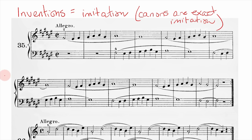But just for the purpose of today's tutorial I want to do a quick super quick recap on what a Canon is. So a Canon is a type of invention and inventions are pieces based on imitation.